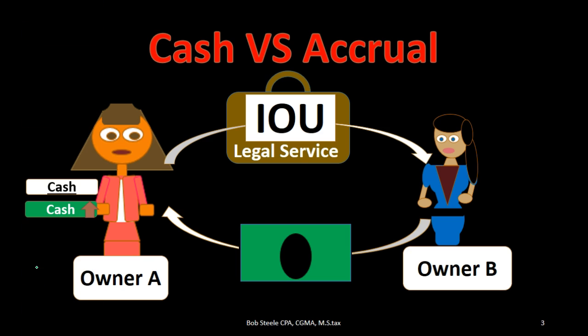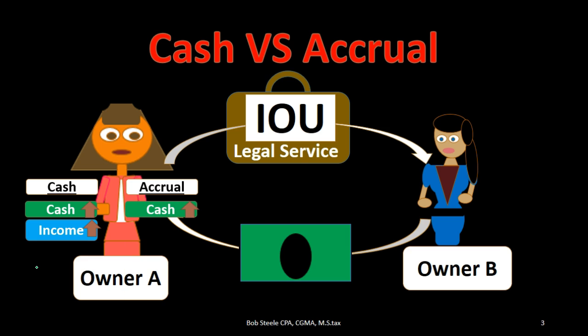On a cash basis, we would say cash went up and recognize the income at that point in time. But under an accrual basis, cash still went up, but we really have a liability — meaning we owe something in the future — that would be the unearned revenue. We don't necessarily owe money in the future; we owe our legal services. However, if we don't deliver the legal services, then we would probably have to pay the money back.